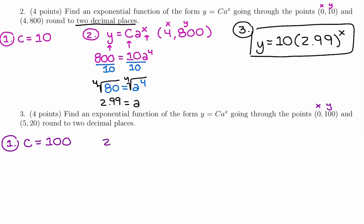Our second step is to plug in the non-zero point. Y equals c times a to the x. Our non-zero point is 5 comma 20, as our x and our y. So I'm going to replace y with 20. Our value for c that we said in the first step was 100. And we have a to the x power is the fifth.